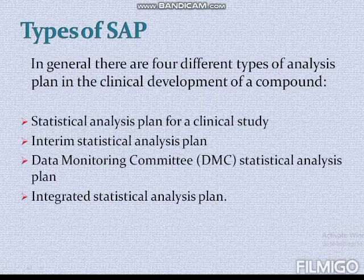In general, there are four different types of statistical analysis plan. Number one: the Statistical Analysis Plan for a clinical study, which describes the planned statistical analysis of a study. Number two: the Interim Statistical Analysis Plan. Number three: the Data Monitoring Committee Statistical Analysis Plan. Number four: the Integrated Statistical Analysis Plan.